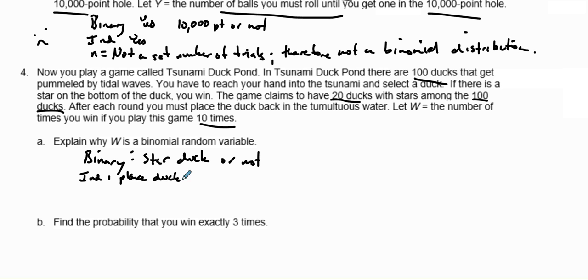Well, first the event is binary - either you find a star duck or not. It's independent because you place the ducks back in water each time. There is N equals 10, so there's a set number of trials. And finally, same probability? Yes, the probability P equals 20 out of 100, which is 1 out of 5 or 0.2.